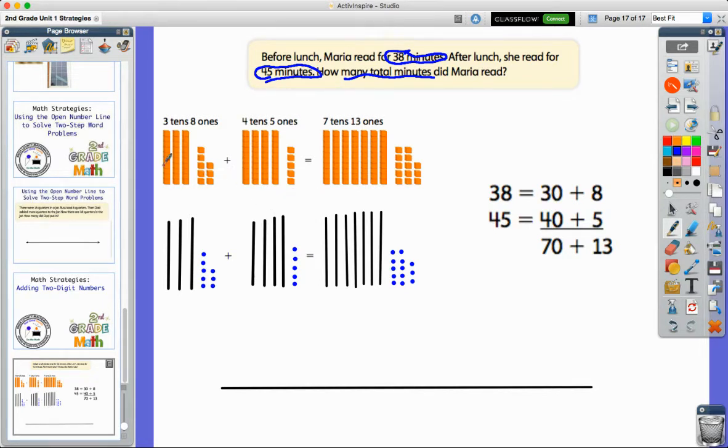And so what we can do is we can combine all the tens. So 4 tens and 3 tens gives us 7 tens that we have right here. And we put together our ones. Well, 8 ones and 5 ones is actually 13 ones. But we know that we can't have more than one digit in the ones place. So when we have those 13, this group of 10,